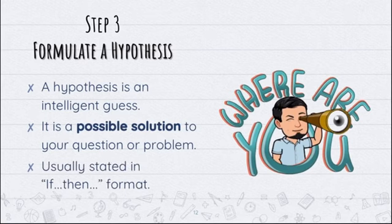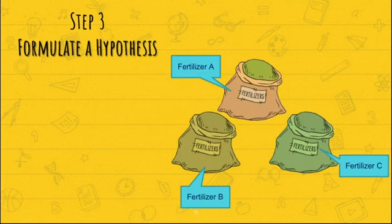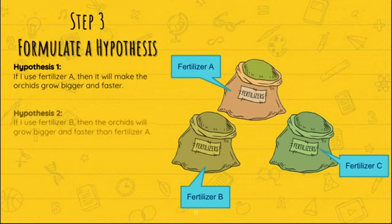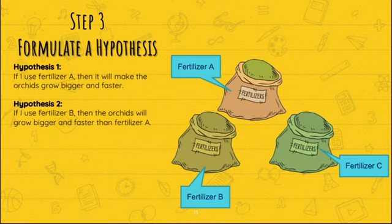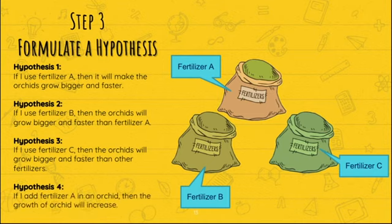A hypothesis is usually stated in an if-and-then format. So let's take the situation again. Assuming there are three available fertilizers, we need to come up with a possible answer to our problem. We can have the first hypothesis: If I use fertilizer A, then it will make the orchids grow bigger and faster. Another hypothesis: If I use fertilizer B, then the orchids will grow bigger and faster than fertilizer A. Or: If I use fertilizer C, then the orchids will grow bigger and faster than other fertilizers. Or: If I add fertilizer A to an orchid, then the growth of the orchid will increase.